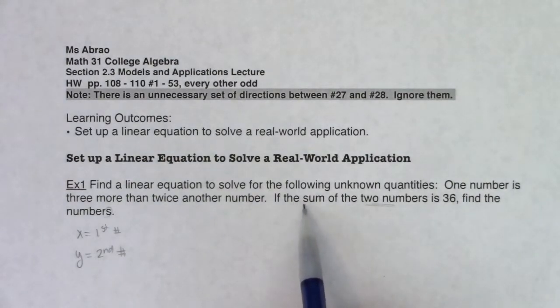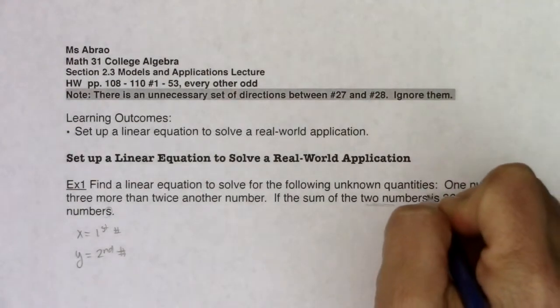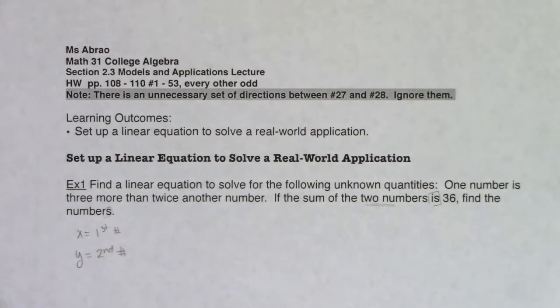I'm actually going to start with the easier of the two. I'm going to start with this sentence: if the sum of the two numbers is 36. This word 'is,' most of the time or frequently when you see 'is' in a math application, it's a stand-in for the equal sign. So I know that something is equal to 36, and that something, it says, is the sum of the two numbers. If we're talking about sums, we're talking about adding things.